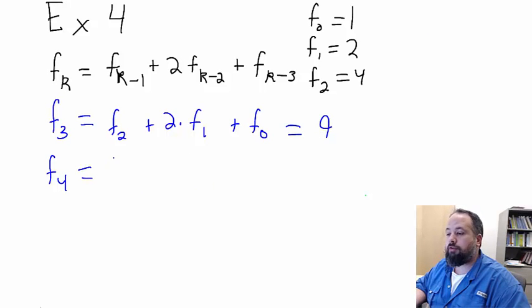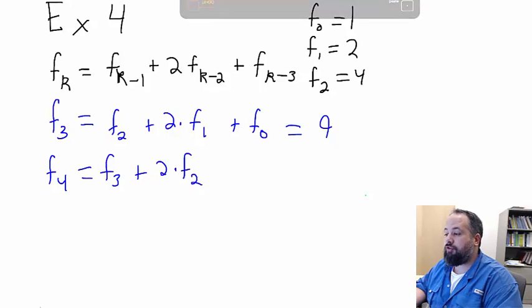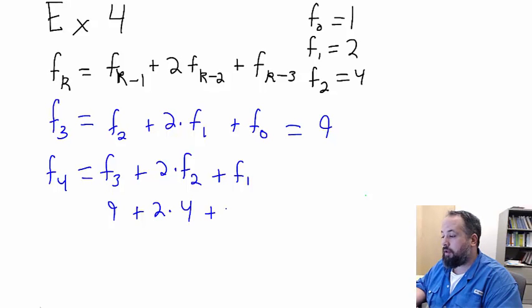f of 4 is going to be f of 3 plus 2 times f of 2 plus f of 1. So that's 9 plus 2 times 4 plus 2. 9 plus 8 is 17 plus 2 is 19.